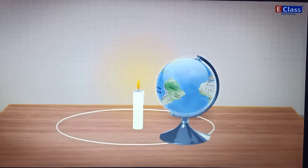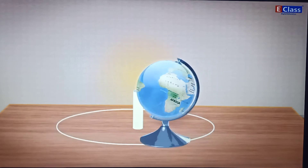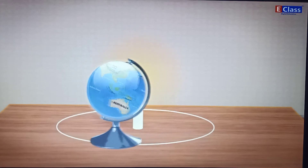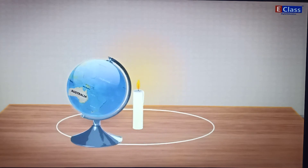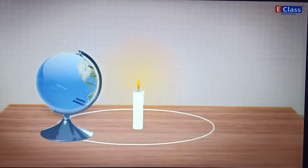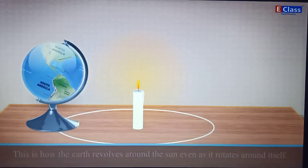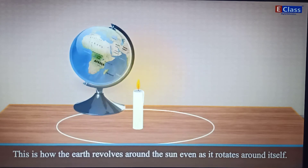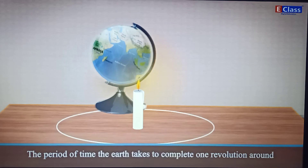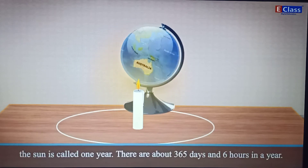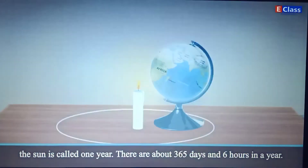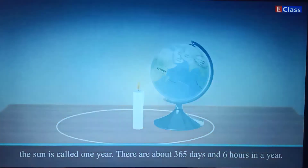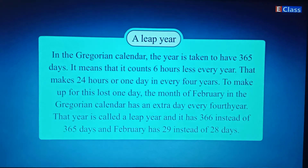A Year: now move the globe along the circle on the table. As you do this, keep rotating the globe and ensure that the axis doesn't change its orientation. Eventually the globe will come back to its original place on the circle. This is how the Earth revolves around the Sun even as it rotates around itself. The period of time the Earth takes to complete one revolution around the Sun is called one year. There are about 365 days and six hours in a year.